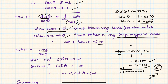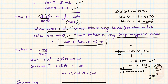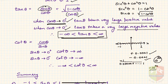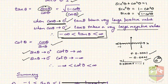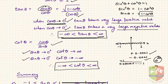So tan theta can take any value from minus infinity to plus infinity. Similarly, cot theta can also be analyzed by taking very small positive and very small negative values of sine theta. Cot theta also ranges from minus infinity to plus infinity.